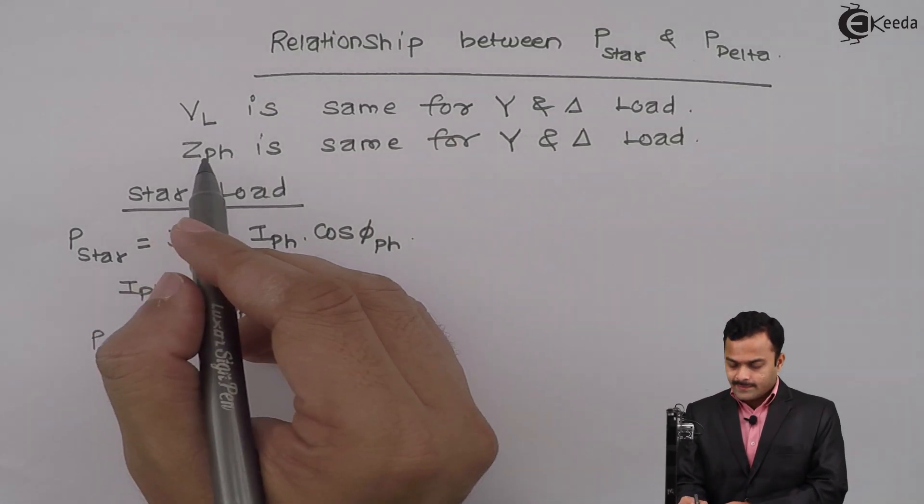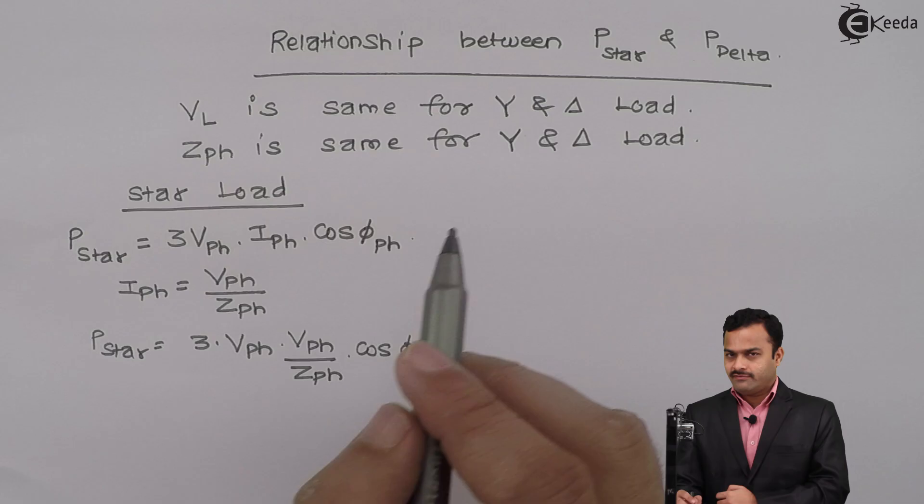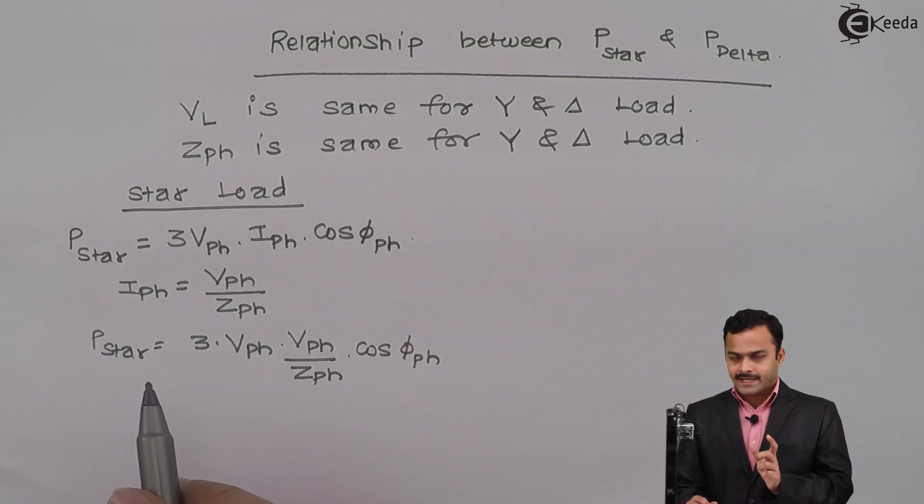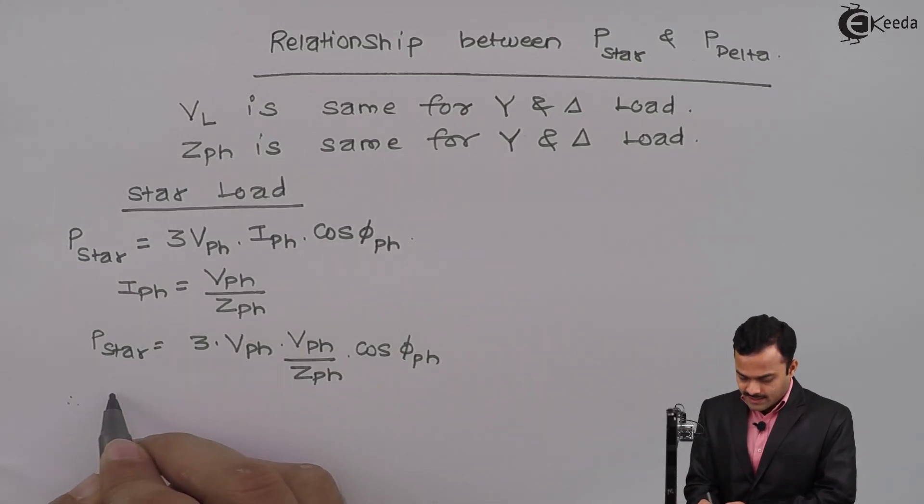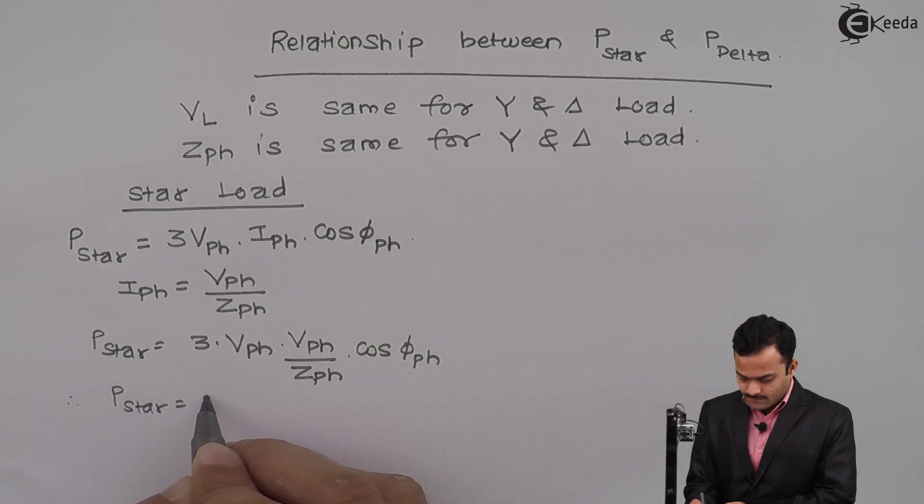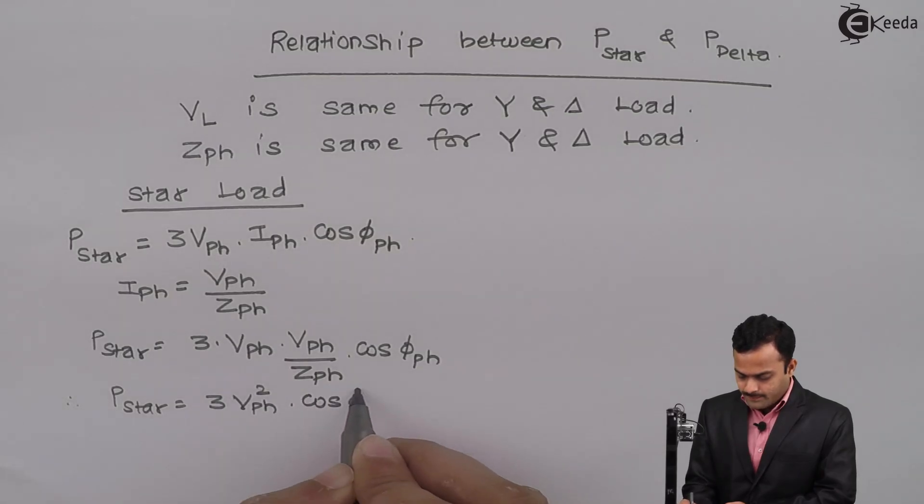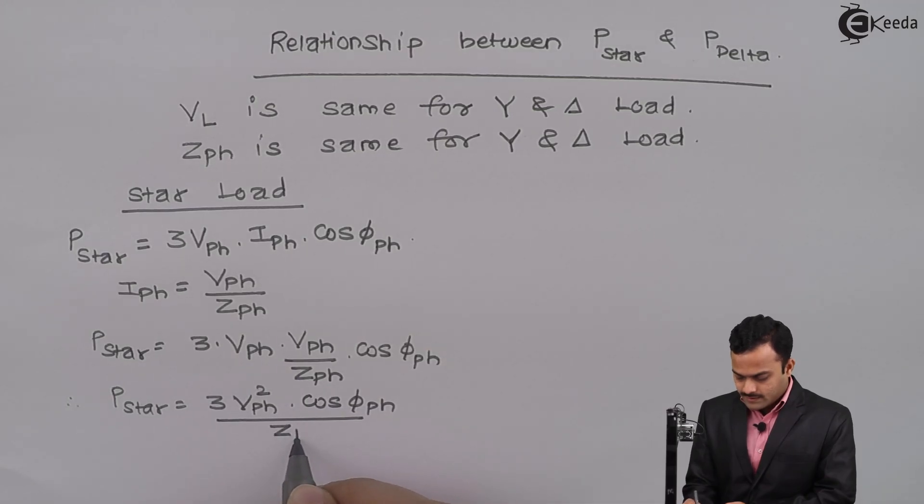We are considering ZPH is same, that means we are considering its magnitude and phase angle. Hence, power factor is also same whether it is a star load or a delta load. So I will get P star as 3 VPH square multiplied by cos phi PH divided by ZPH.